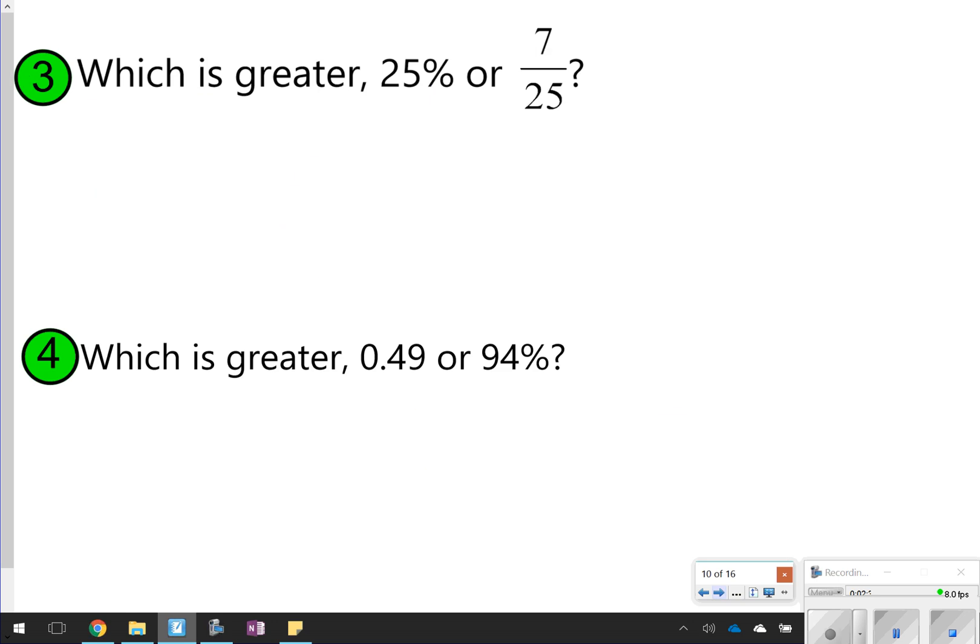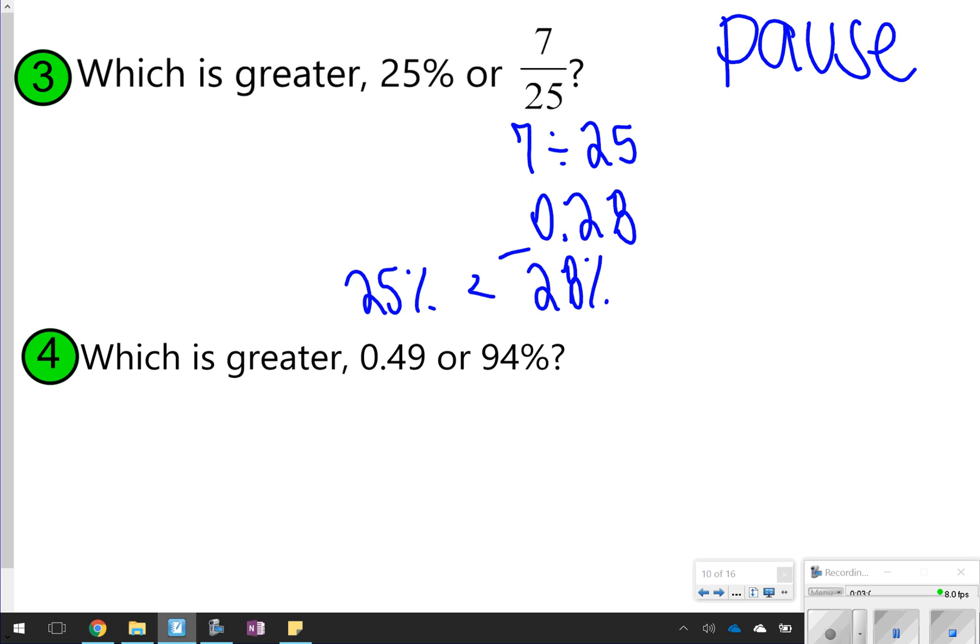These next two, again, you're going to try on your own, numbers 3 and 4. Pause the video. Once you're done, click play. So for number 3, I would probably change the fraction into a percent or a decimal. How you do that is you take 7 and divide it by 25, and you get 0.28. And right away, I can already tell that 0.28 is bigger than 25%. If needed, you can change 0.28 into a percent. So you're basically comparing 25% and 28%. 28% is larger, so your answer for number 3 would be, not 28%, let's put it back in that original format, 7/25.